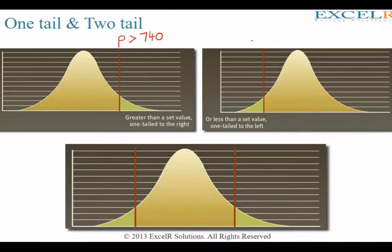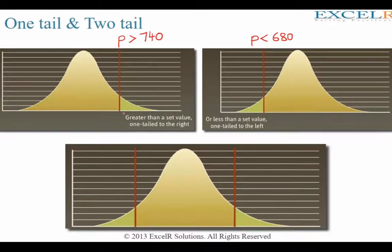If I randomly choose a student from a pool of students, what is the probability that the GMAT score of the student would be less than 680? When you are trying to solve these kinds of problems it is called one tail. In this scenario it is one tail towards the left.